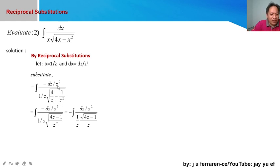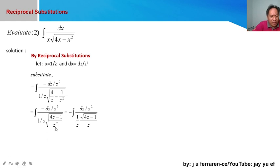We take the LCD of z squared in the expression under the radical. So z²/z = z, and we have 4z − 1 under the square root. The square root of z² simplifies to z, allowing us to cancel and simplify the expression.